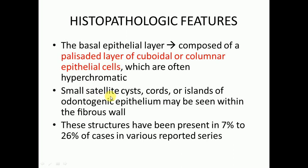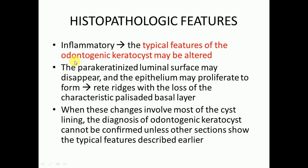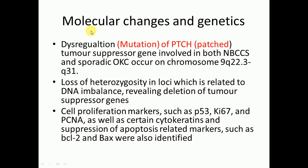Small satellite cells, cords, or islands of odontogenic epithelium may be seen within the fibrous wall, present in seven to twenty-six percent of cases. If inflammation is present, the typical features of OKC may be altered: the parakeratinized luminal surface may disappear and the epithelium may proliferate to form rete ridges with loss of the characteristic palisaded basal layer. If these changes involve most of the cyst lining, diagnosis cannot be confirmed unless other sections show the typical features.